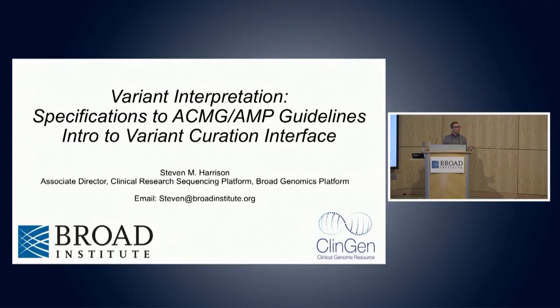Good morning, everyone. I'm going to talk about walking through the variant interpretation process. You've already learned filtration — how to narrow down a huge set of variants to a select few. You've learned how to curate those genes to see if you should even pursue a variant interpretation. So now we're at this third step: you've found these variants, you've looked at the gene, and now you need to actually classify these variants and determine if they could be causative for disease. Today I'll first walk through the ACMG guidelines for variant interpretation, and then spend about the last half hour doing a demo of a variant curation interface you'll be using during the workshop.